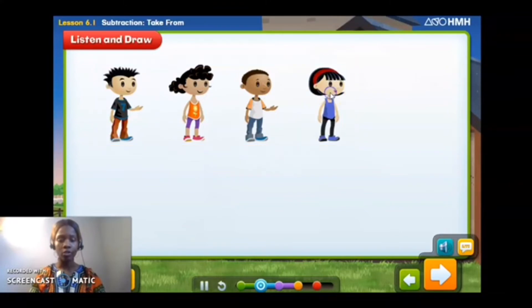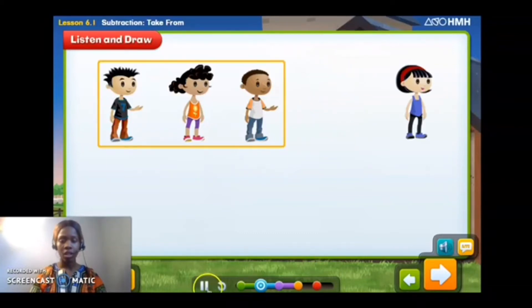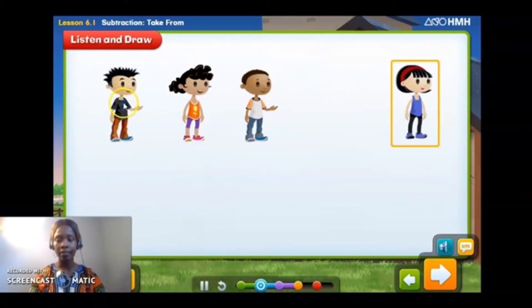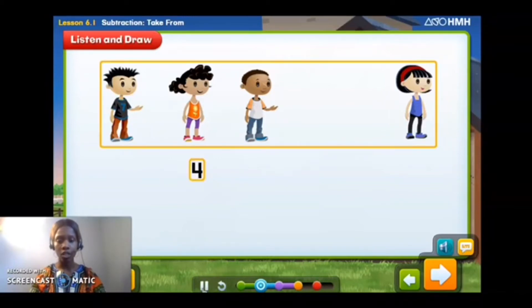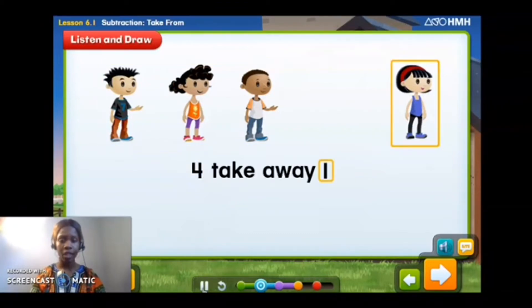Okay, one student leaves the library so we're going to take away one. And how many students are remaining at the library? How many students do we have left? Well, let's count the students to find out. So we started—remember we started off with four students all together. We took away one. So four take away one equals... hmm.